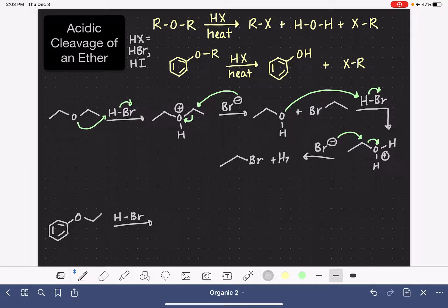This is another SN2 reaction. This gives us our second alkyl halide and the water molecule, which comes off as a good leaving group. There are the products of this reaction: two alkyl halides and water.